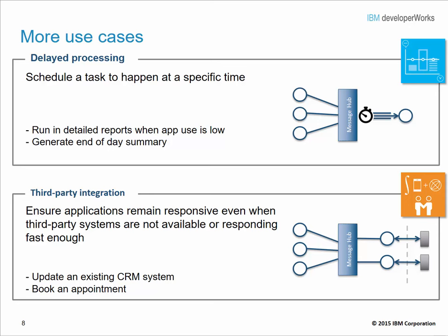Another use case is delayed processing — scheduling a task to happen at a specific time, such as running detailed reports when app use is low or generating an end-of-day summary. There is also the third-party integration use case, which can ensure that applications remain responsive even if a third-party system is unavailable or not responding fast enough. Examples include updating an existing CRM system or booking an appointment that requires interaction with a third-party system.